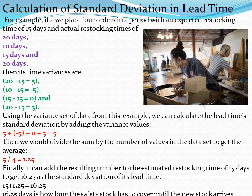For example, if we place 4 orders in a period with an expected restocking time of 15 days and actual restocking times of 20 days, 10 days, 15 days, and 20 days, then the time variances are: 20 minus 15 equals 5; 10 minus 15 equals minus 5; 15 minus 15 equals 0; and 20 minus 15 equals 5. We calculate the lead time standard deviation by adding the variance values: 5 plus (minus 5) plus 0 plus 5 equals 5. Then we divide the sum by the number of values: 5 divided by 4 equals 1.25. Finally, we add the resulting number to the estimated restocking time of 15 days: 15 plus 1.25 equals 16.25 as the standard deviation of lead time.